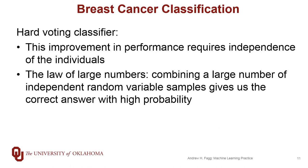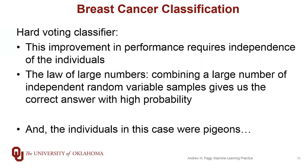This hard voting classifier improvement in performance requires independence of the different individuals. When that independence assumption holds, the law of large numbers says that combining a large number of samples from a random variable can give us the correct answer with high probability. The punchline of this particular paper was that these individuals were not human — they were actually pigeons. And so that's even more impressive.